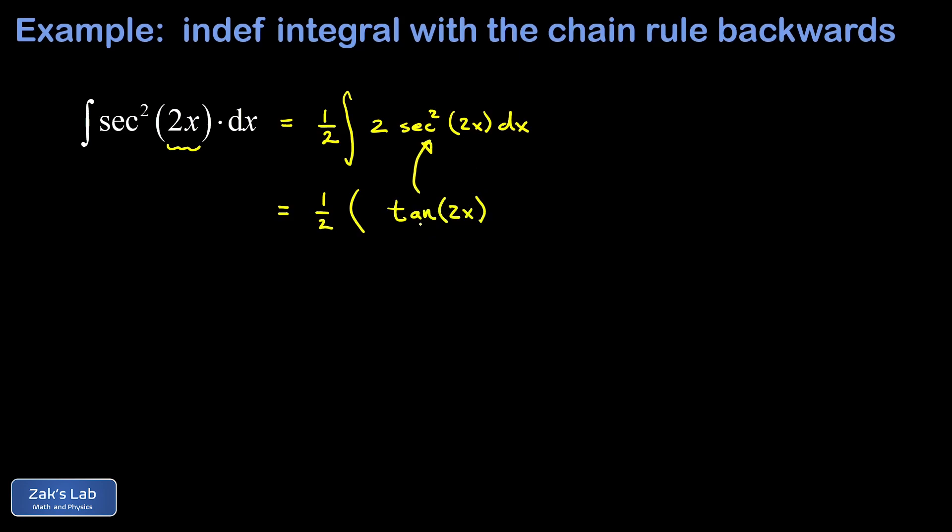And if you try this out, the derivative of tangent with respect to this interior function is secant squared 2x. And then the chain rule says you have to multiply by the derivative of the interior function, which we already set up to make it easier to guess the anti-derivative here. So tangent 2x is basically the answer here.